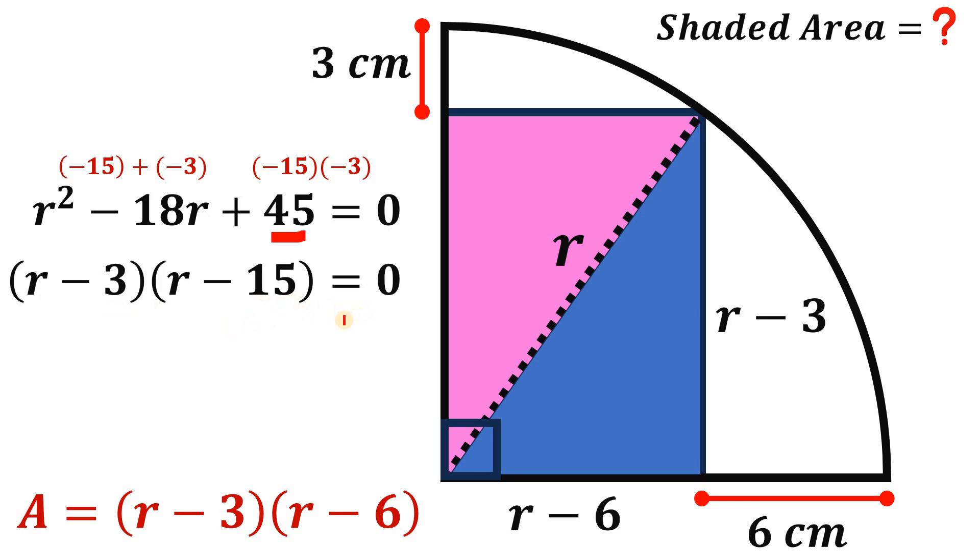So we can factor this quadratic equation as (R minus 3) multiply by (R minus 15). And of course, this is equal to 0. So at least one of them must be equal to 0. So we found two values for R. The first one is R equals 3. And the other R is 15. So we found two possible values for R.